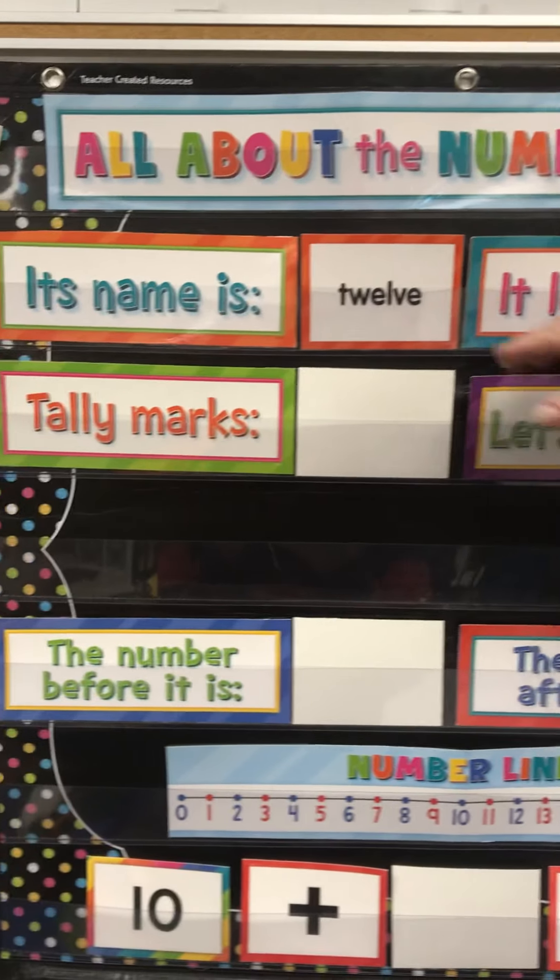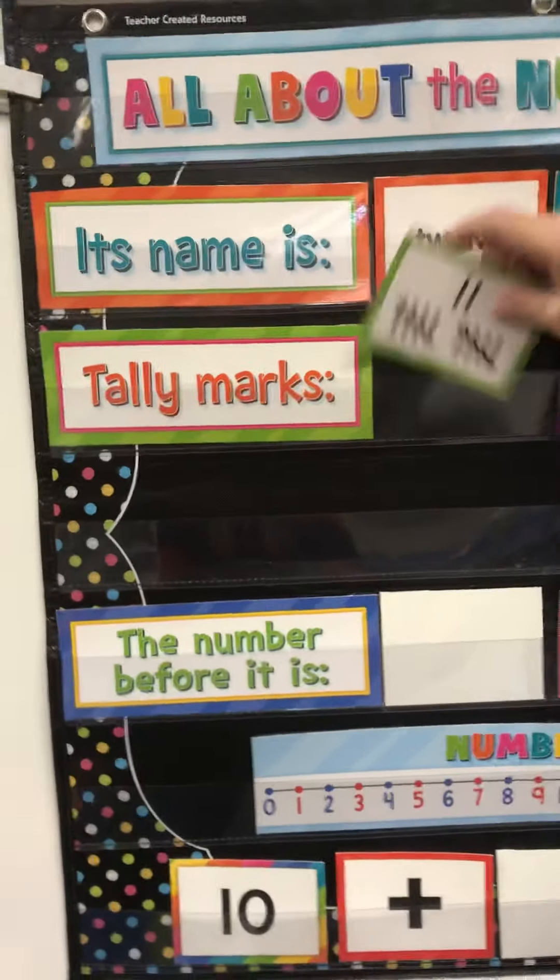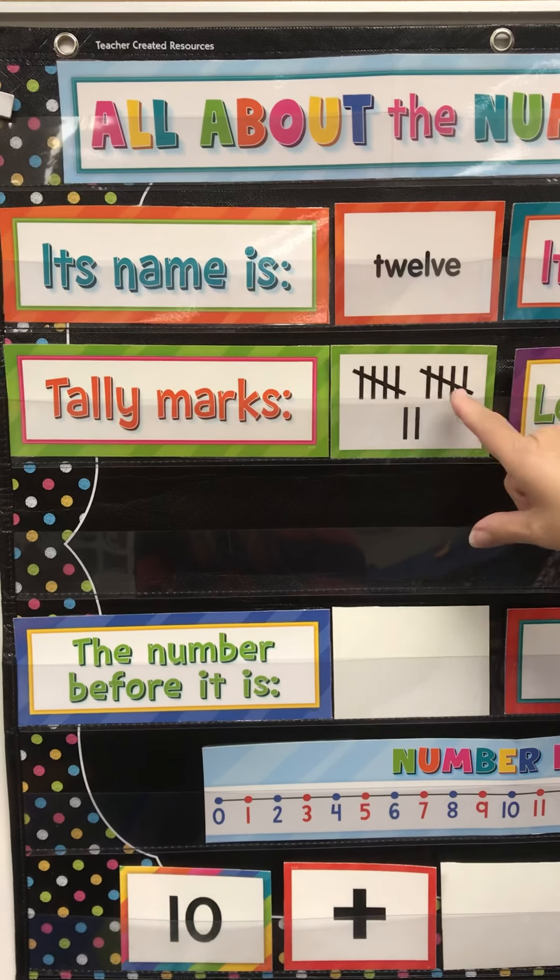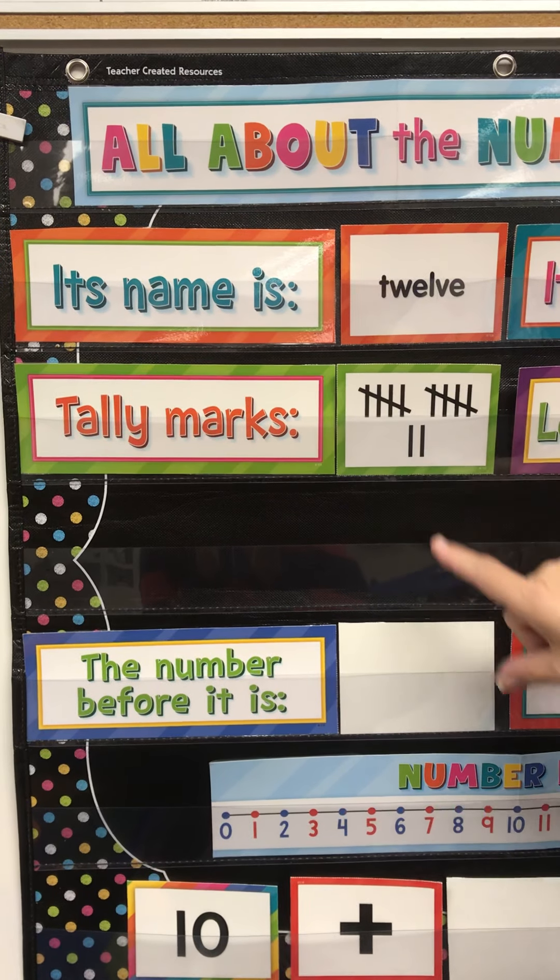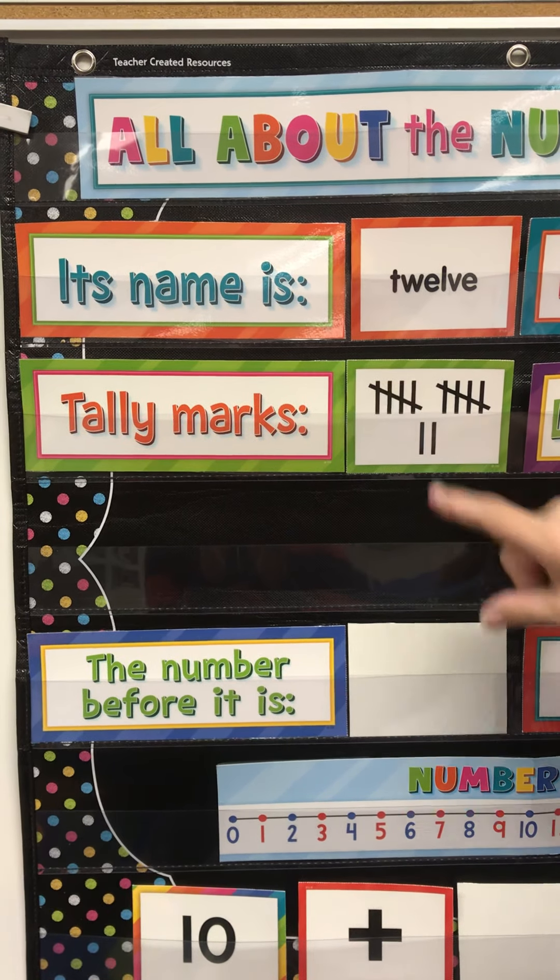When we have 12 tally marks, we have 2 groups of 5. 5, 10 and 2 more. 11, 12.